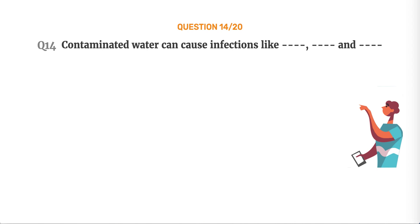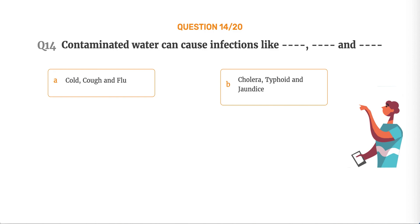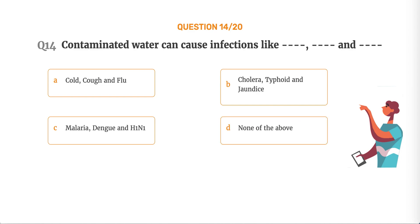Question number 14. Contaminated water can cause infections like dash and dash. Option A, Cold, cough and flu. Option B, Cholera, typhoid and jaundice. Option C, Malaria, dengue and H1N1. Option D, None of the above.